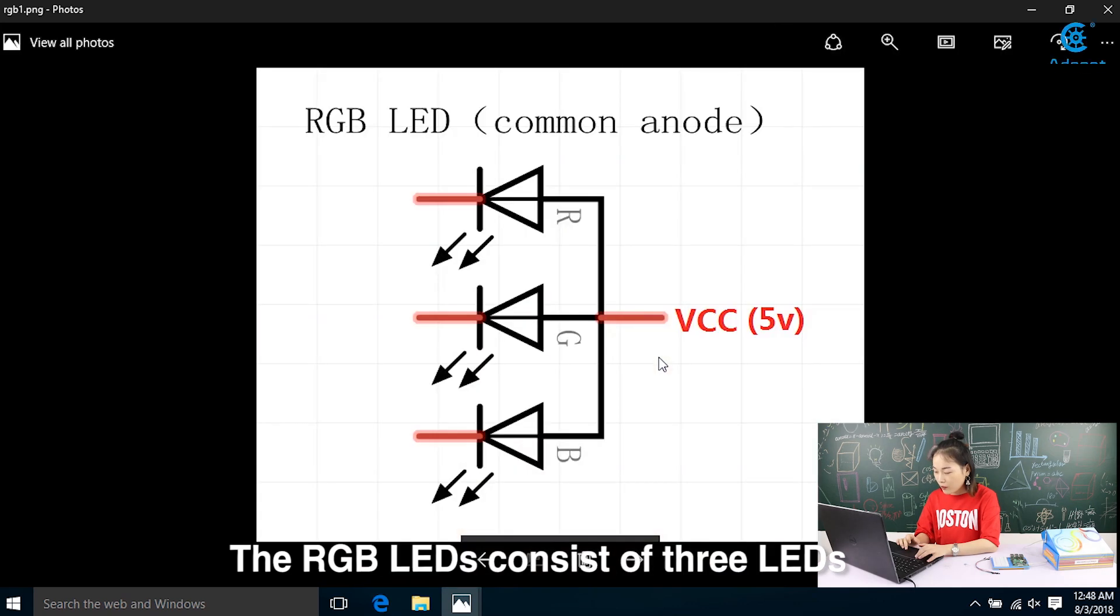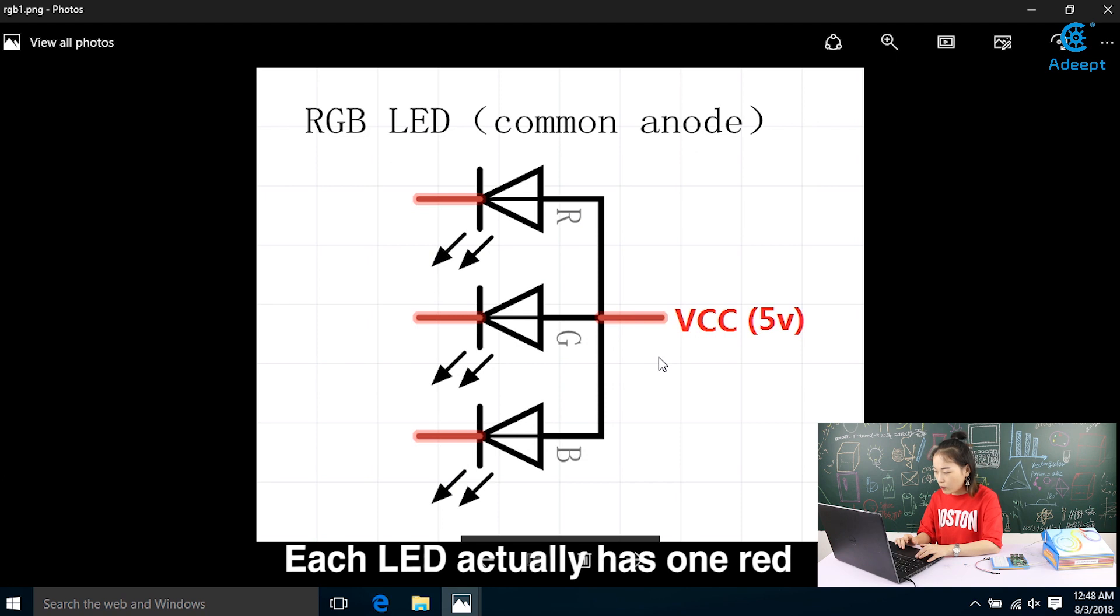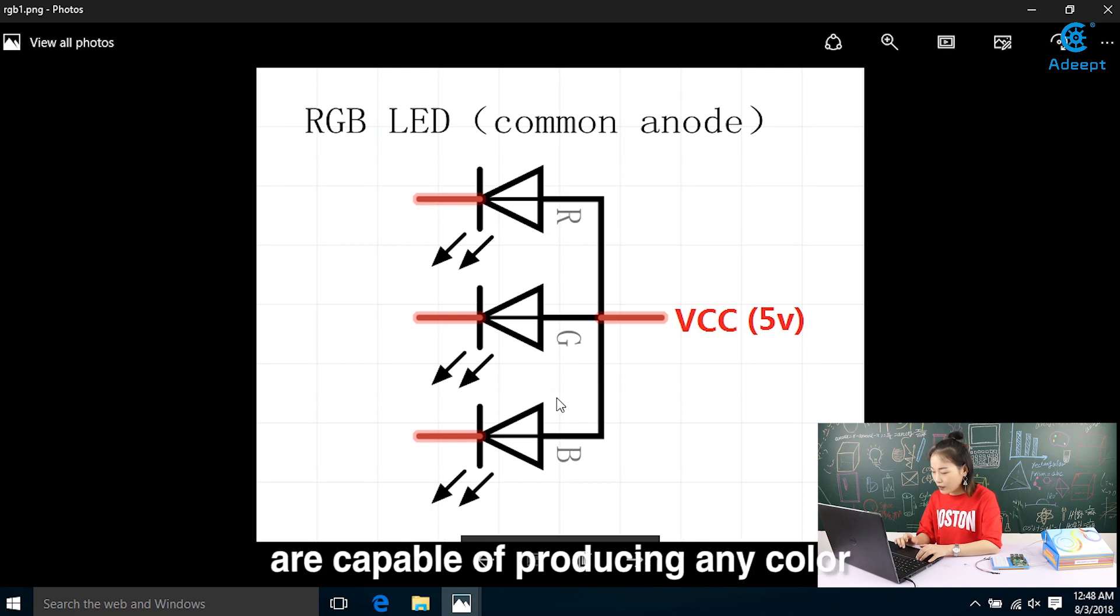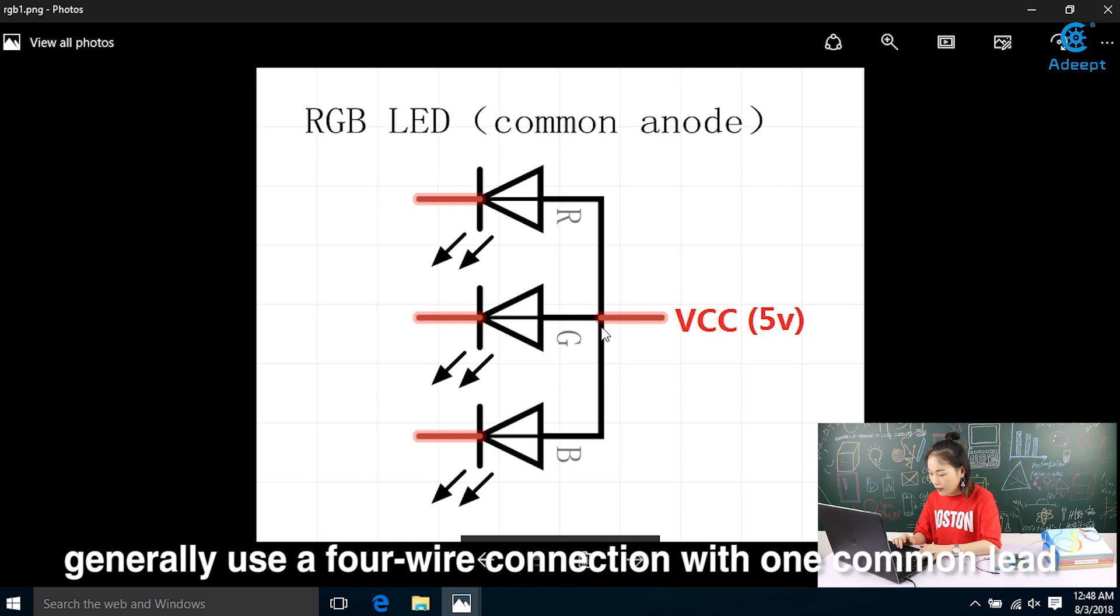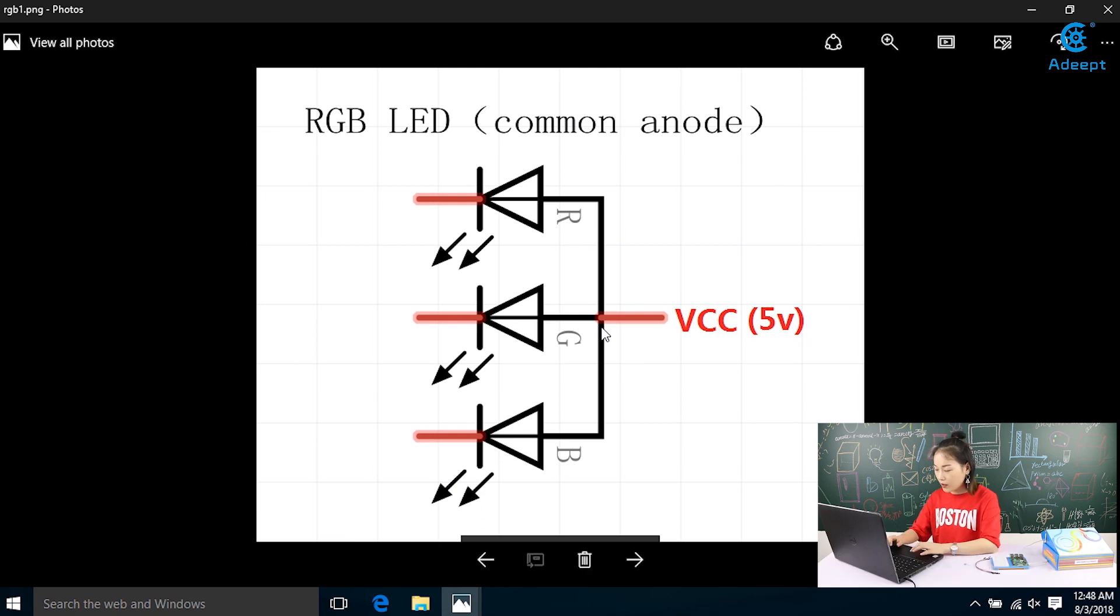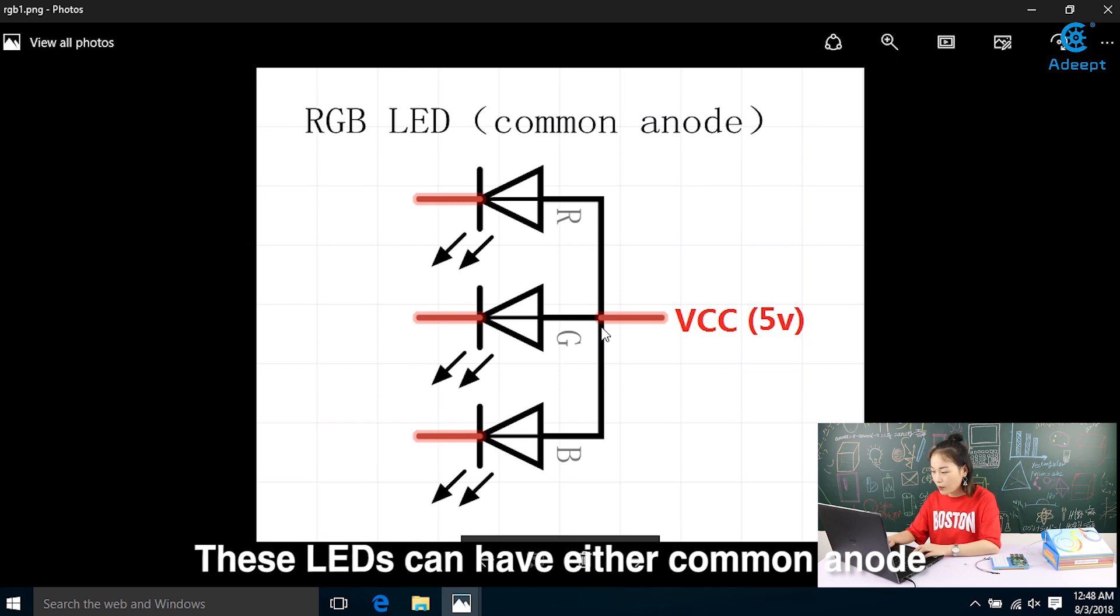The RGB LEDs consist of 3 LEDs. Each LED actually has one red, one green, and one blue light. These 3 colored LEDs are capable of producing any color. Generally use a 4-wire connection with one common LED anode or cathode. These LEDs can have either common anode or common cathode LEDs.